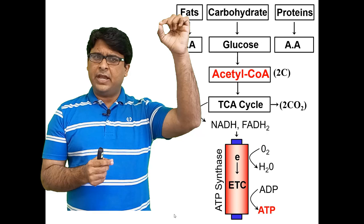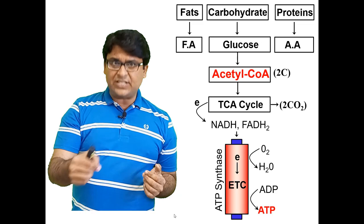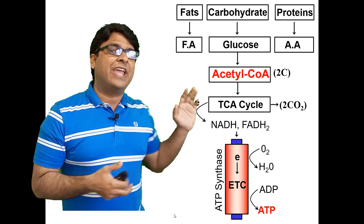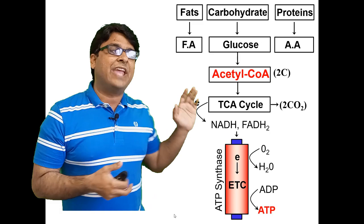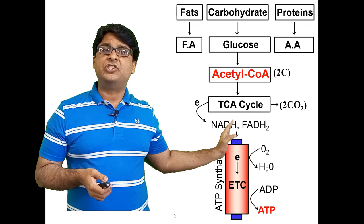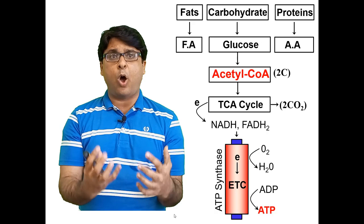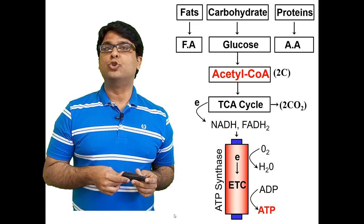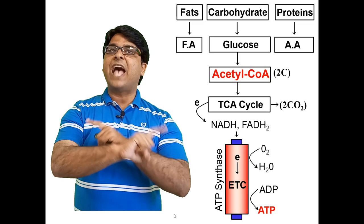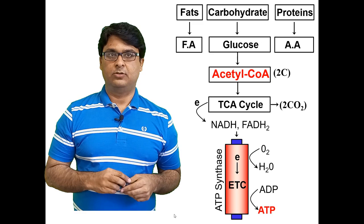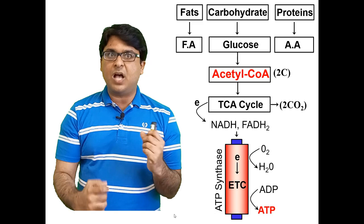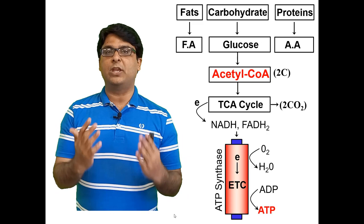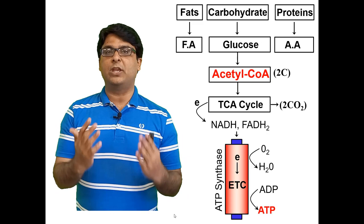Where did the energy go? The energy released as electrons drop from high to low energy is used to generate ATP — adenosine triphosphate — the currency of your body. This is the main reason you eat all day: to produce ATP. ATP powers everything: your heart pumping, active transport throughout your cells — renal, liver, intestinal — and muscle contraction.